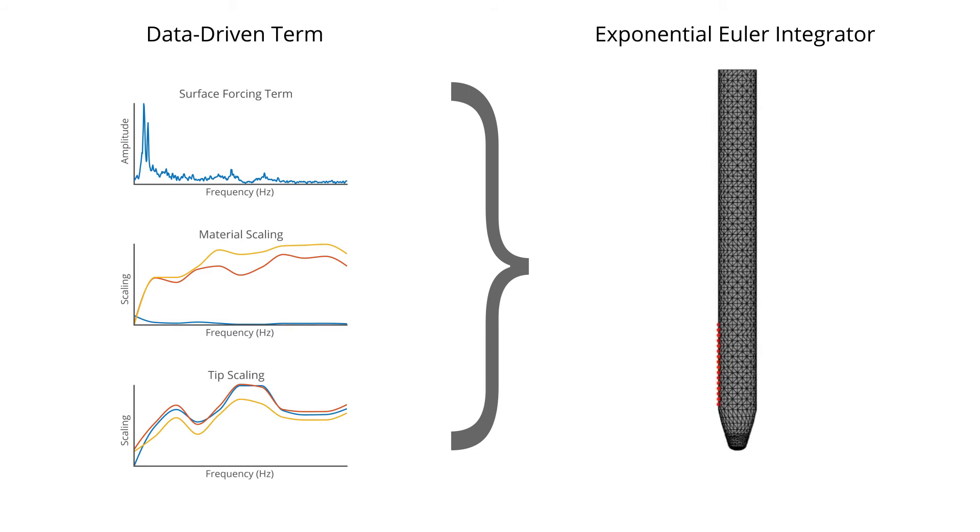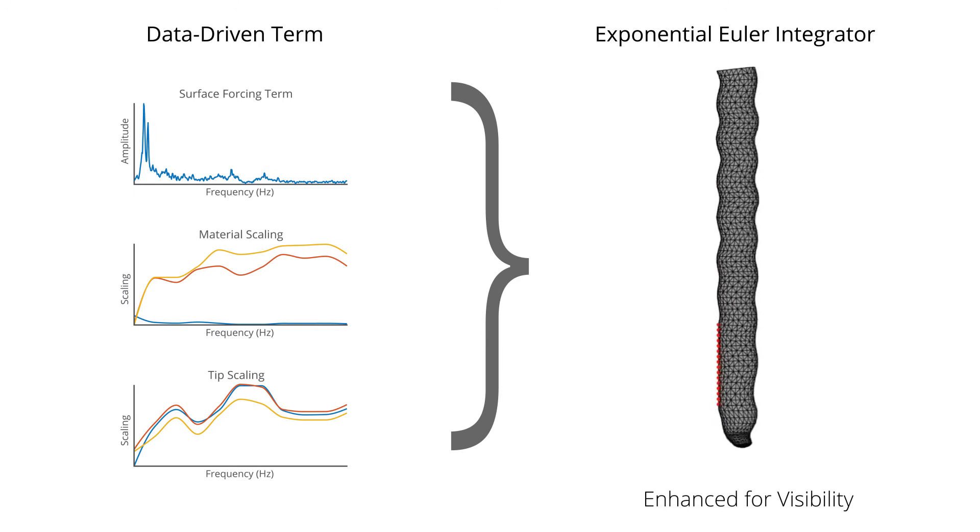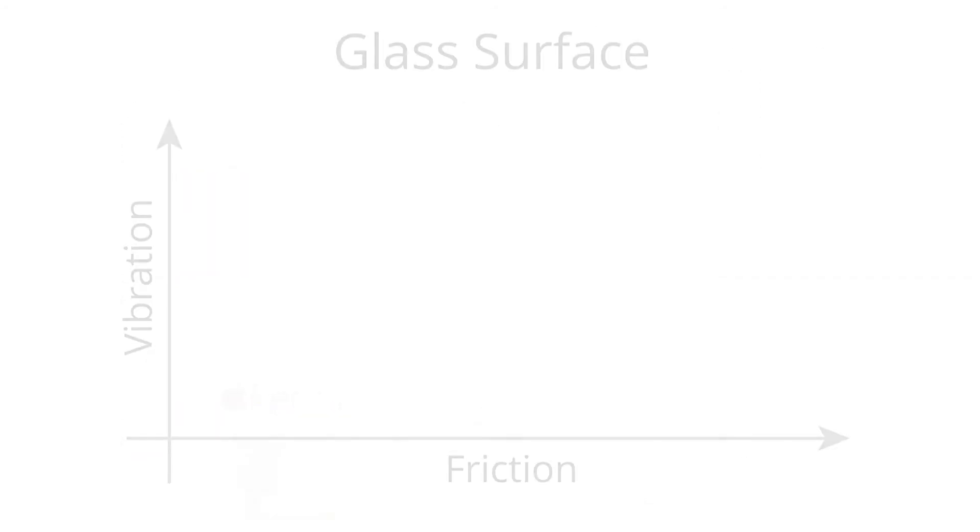First, a data-driven forcing term composed of surface roughness and stylus material and tip scaling factors are used to actuate the tip of a stylus. Then our exponential Euler integrator takes over and simulates the response that would be later perceived by an artist.